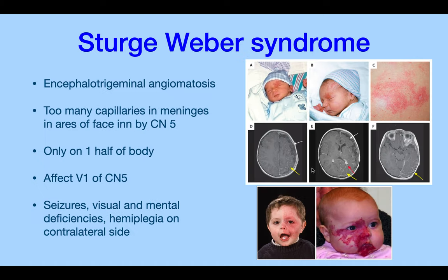Sturge-Weber syndrome is encephalotrigeminal angiomatosis — there are too many capillaries in the meninges in areas of the face innervated by the trigeminal nerve. It affects only one half of the body, involving V1 of the trigeminal nerve and the visual center. Manifestations include seizures, visual and mental deficiency, and hemiplasia on the contralateral side. The capillaries are markedly dilated.